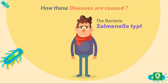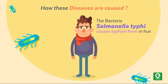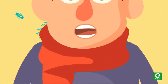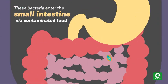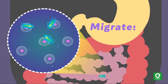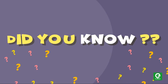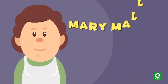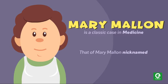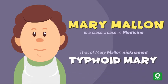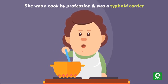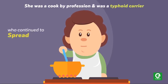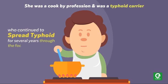The bacteria Salmonella typhi causes typhoid fever in humans. Usually these bacteria enter the small intestine via contaminated food and water and migrate to other organs by the blood. Did you know that Mary Mallon is a classic case in medicine? Nicknamed 'Typhoid Mary,' she was a cook by profession and was a typhoid carrier who continued to spread typhoid for several years through the food she prepared.